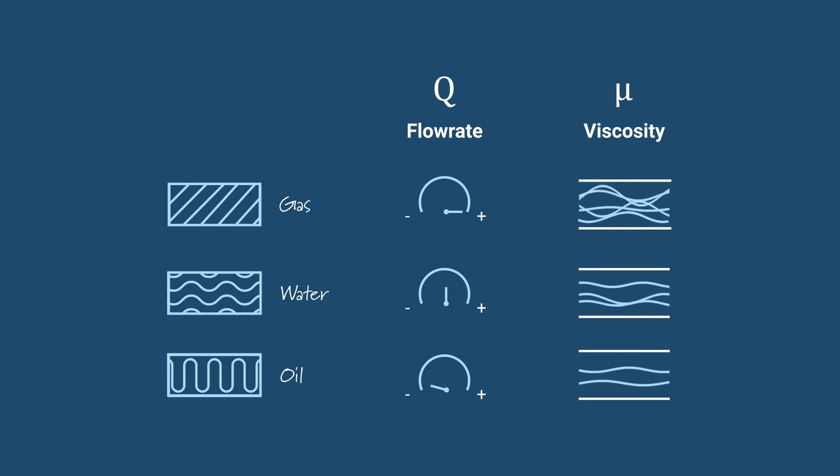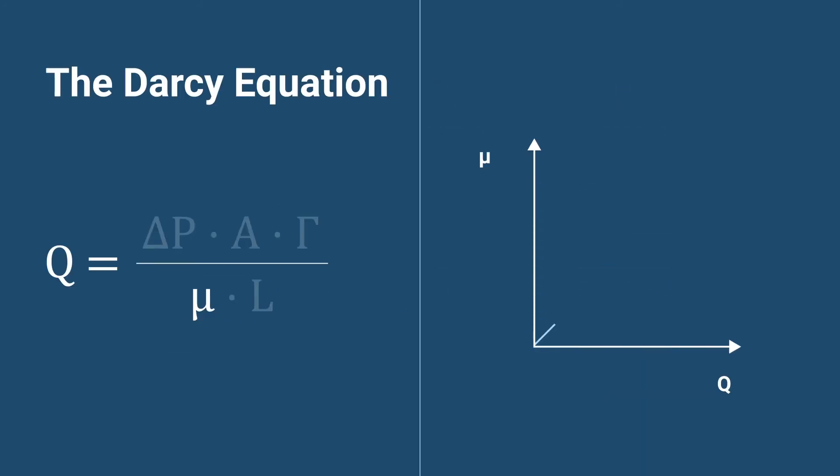This is due to the lower viscosity of water and gas, a factor which we know from Darcy's law is inversely proportional to the flow rate. Meaning the lower the viscosity, the higher the flow rate.